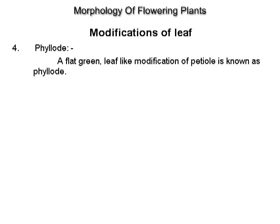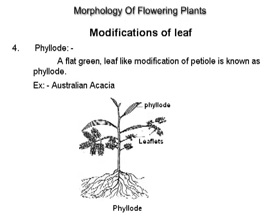Phyllode. A flat, green leaf-like modification of a petiole is known as a phyllode. Example: Australian Acacia.